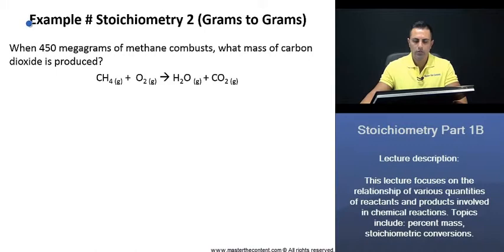Now what we're going to do is we're going to convert grams to grams. When 450 megagrams of methane combusts, what mass of carbon dioxide is produced? First, what we want to do is we want to see if our equation is balanced. Is our equation balanced here? No, it's not.